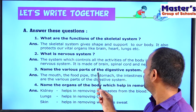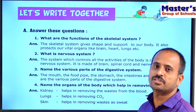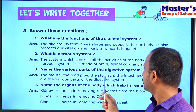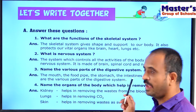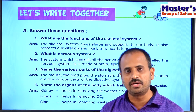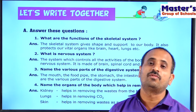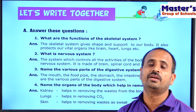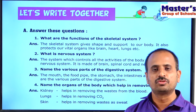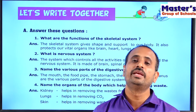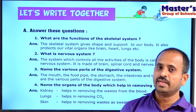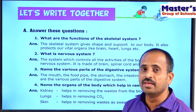The third question is: Name the various parts of the digestive system. The mouth, food pipe, stomach, intestines, and anus are the various parts of the digestive system. The digestive system converts our food items into simpler form — we eat different types of food containing oils and fats, and these must be converted so our body can absorb nutrients. This conversion is called digestion.